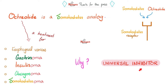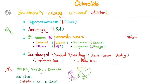Octreotide is a universal inhibitor. We can also use it to manage acromegaly and hyperprolactinemia because it inhibits the release of growth hormone and prolactin, respectively. In the next video, I'll tell you about VIPoma, and the treatment will also involve octreotide.